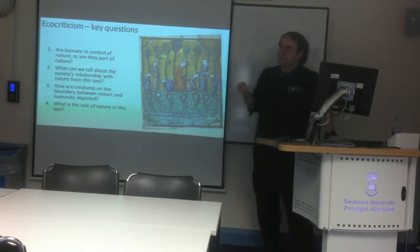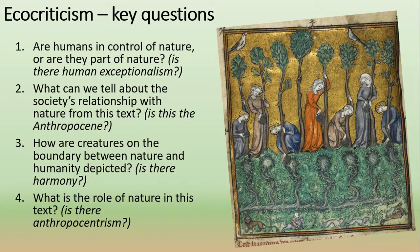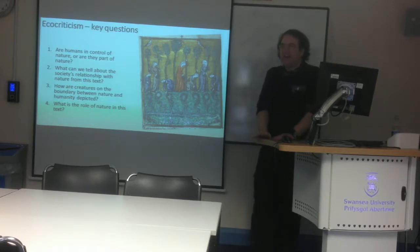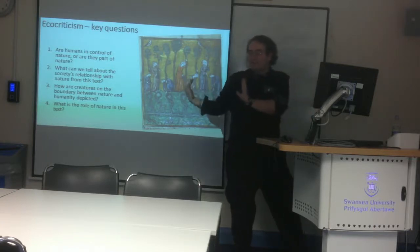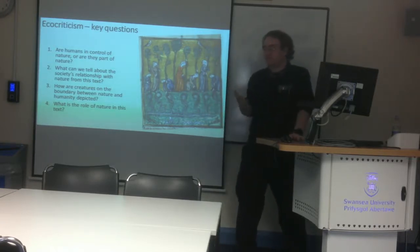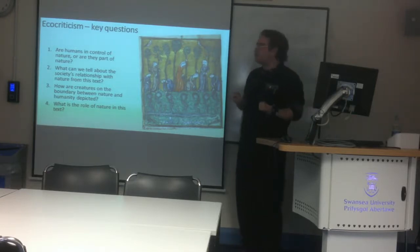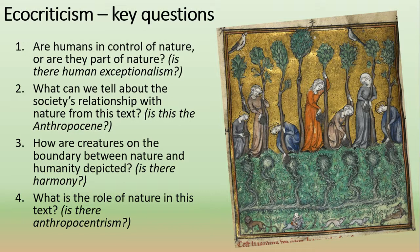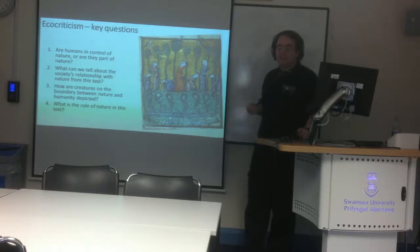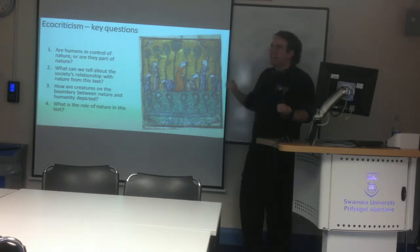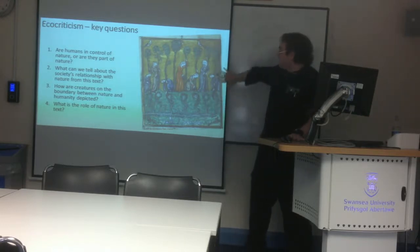Question three: how are creatures on the boundary between nature and human depicted? In literature you might find vampires — human and yet superhuman — or tree spirits, creatures which look like humans but are part of nature. In the picture of the ladies planting trees we've got a couple of what we call commensal species — species which live alongside humans. None of the women seem to care about these jays, which shows a positive, harmonious relationship between humans and animals on the edge of human society.